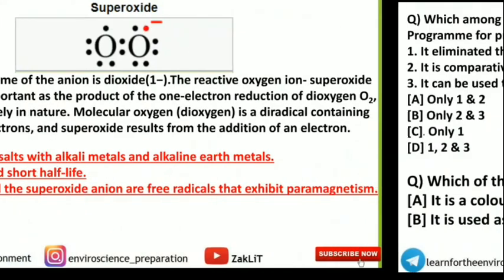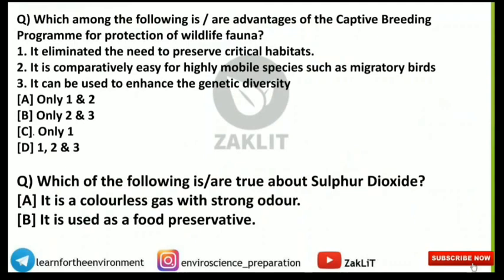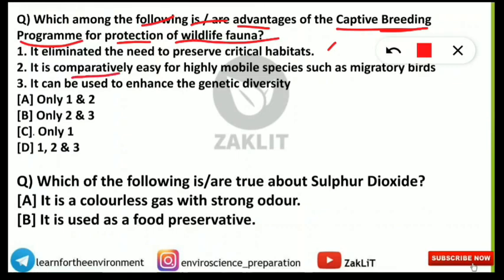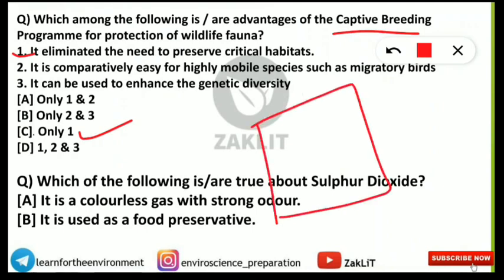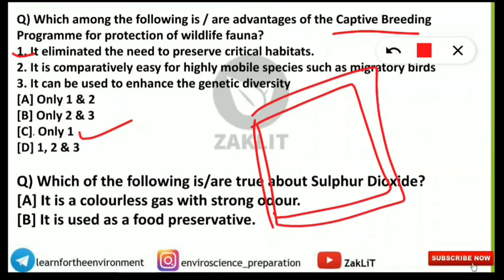The next question is from ecology and biodiversity conservation: which of the following are advantages of the captive breeding program for protection of wildlife fauna? The options are: (1) it can eliminate the need to preserve critical habitat; (2) it is comparatively easy for highly mobile species such as migratory birds; (3) it can be used to enhance genetic diversity. The correct option is C — only statement one is correct.